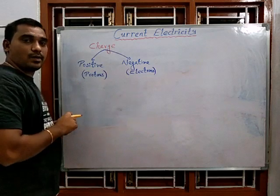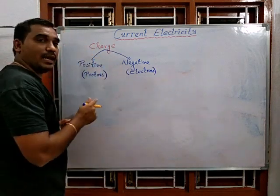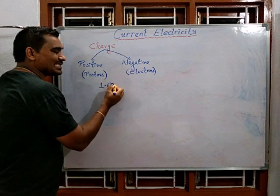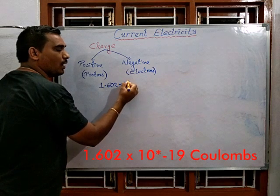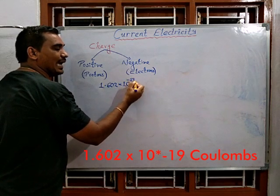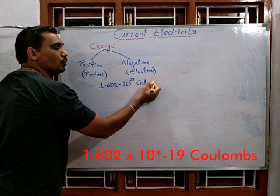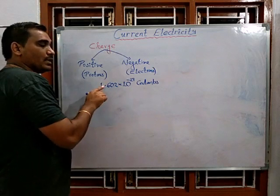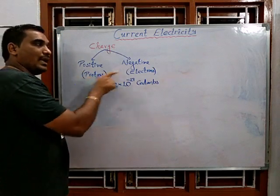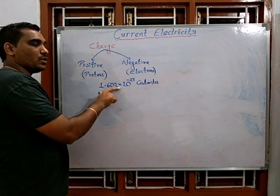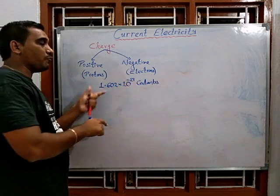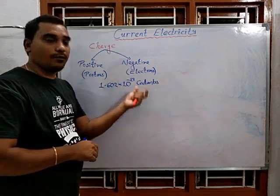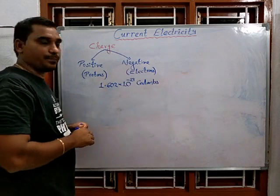Protons and electrons both possess charge. The value is 1.602 into 10 to the power of minus 19 coulombs — coulombs being the unit of charge. Protons carry 1.602 × 10⁻¹⁹ coulombs of positive charge, and electrons carry 1.602 × 10⁻¹⁹ coulombs of negative charge.